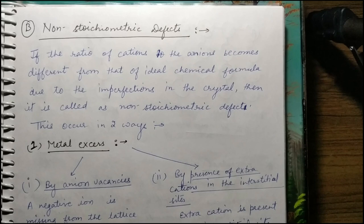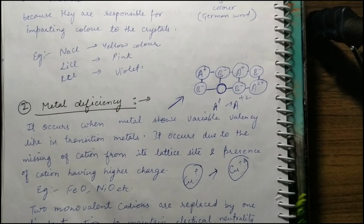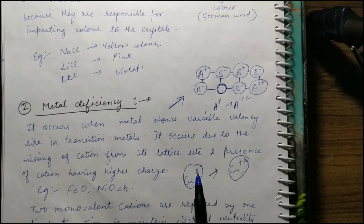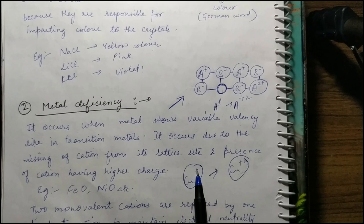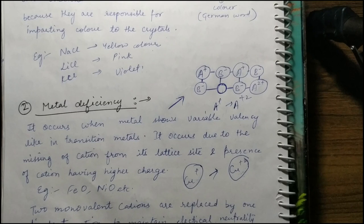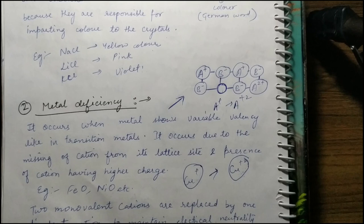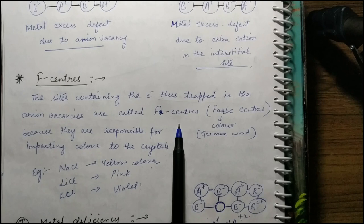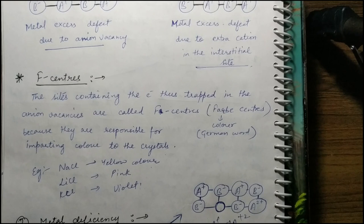Metal deficiency occurs in metals that show variable valency — for example copper(I) and copper(II). Two monovalent cations are removed and replaced by one divalent cation, leaving one lattice site vacant — generating a hole. Electrical neutrality is maintained here. We also studied F-centers (Farbenzentren) in relation to metal excess defects — these are responsible for the different colors observed in different crystals.